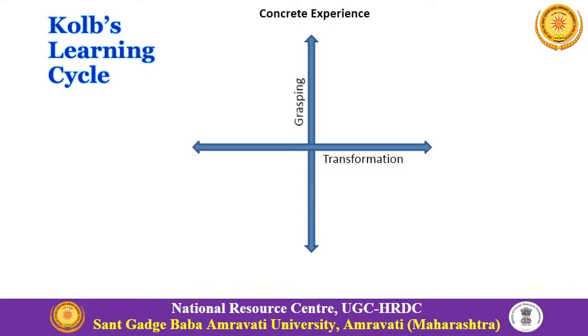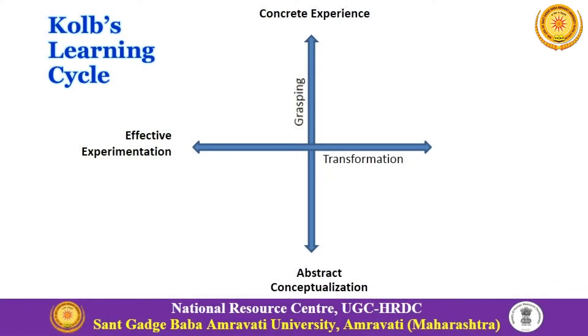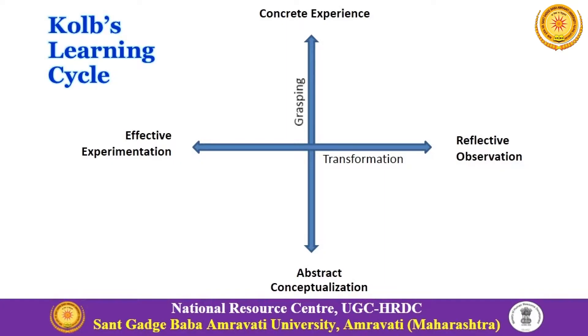People grasp information through concrete experience, but we also grasp information by abstractions, by reading, by observing and seeing the pattern in those observations — that is abstract conceptualization. Transformation of the information we grasp can also go through two different processes: we can actively experiment with that information, or we just observe it from a different perspective, which is called reflective observation.